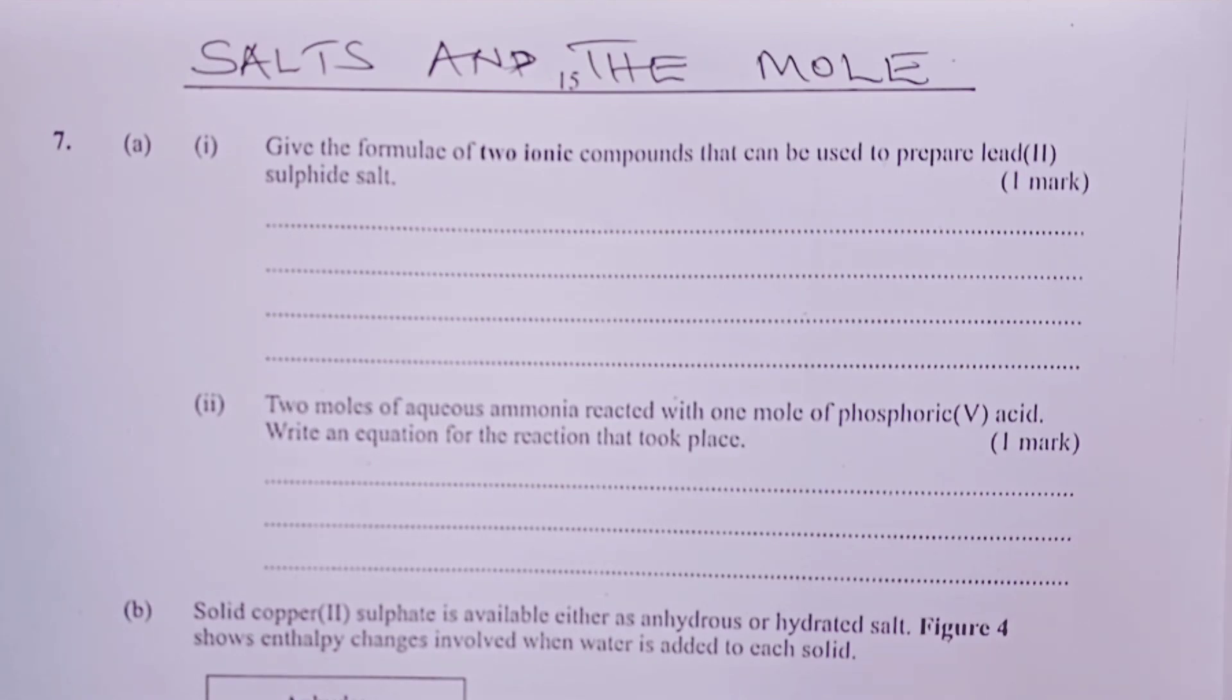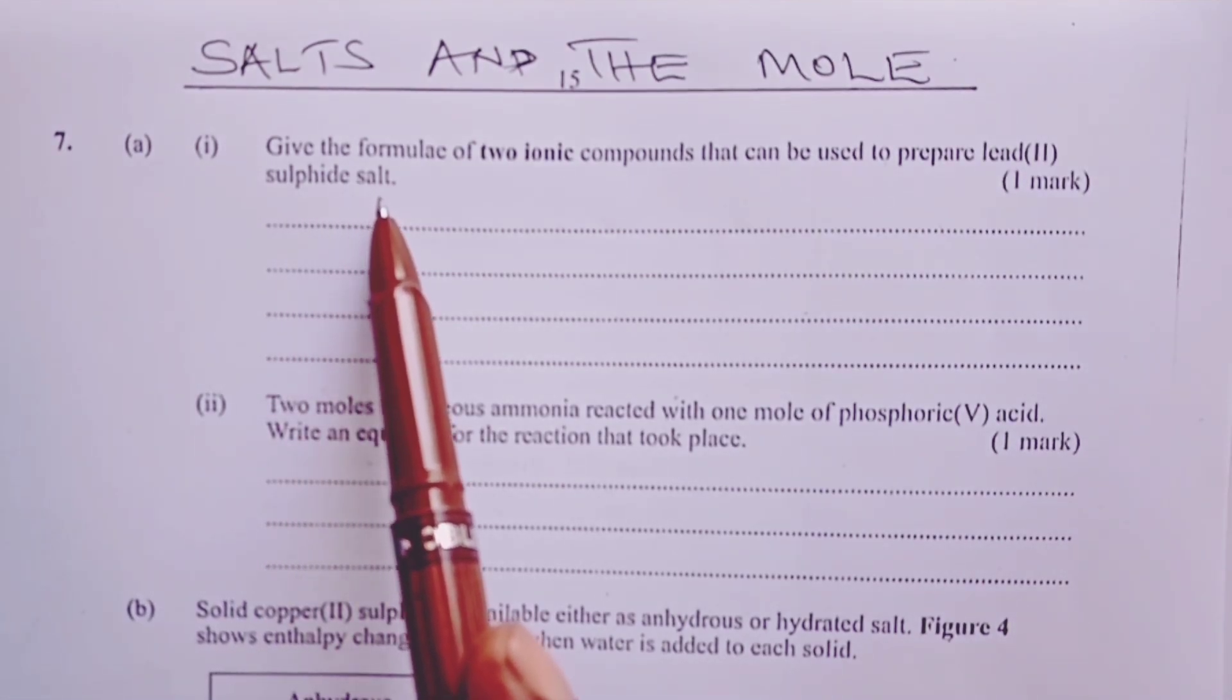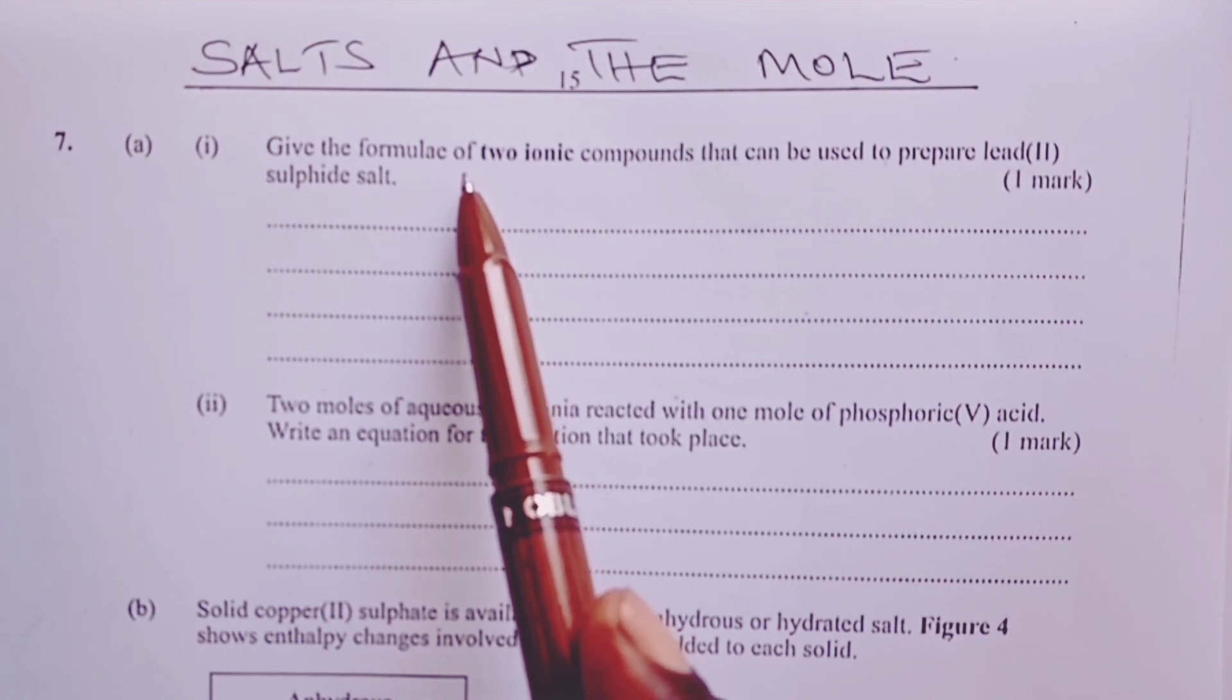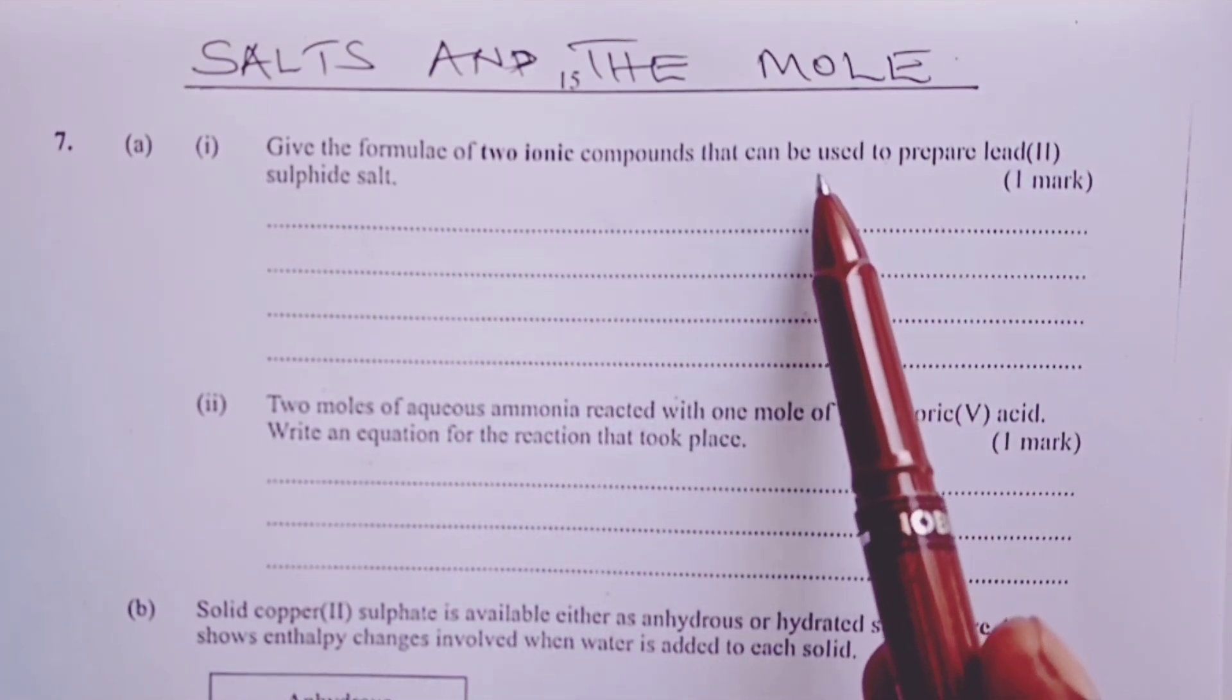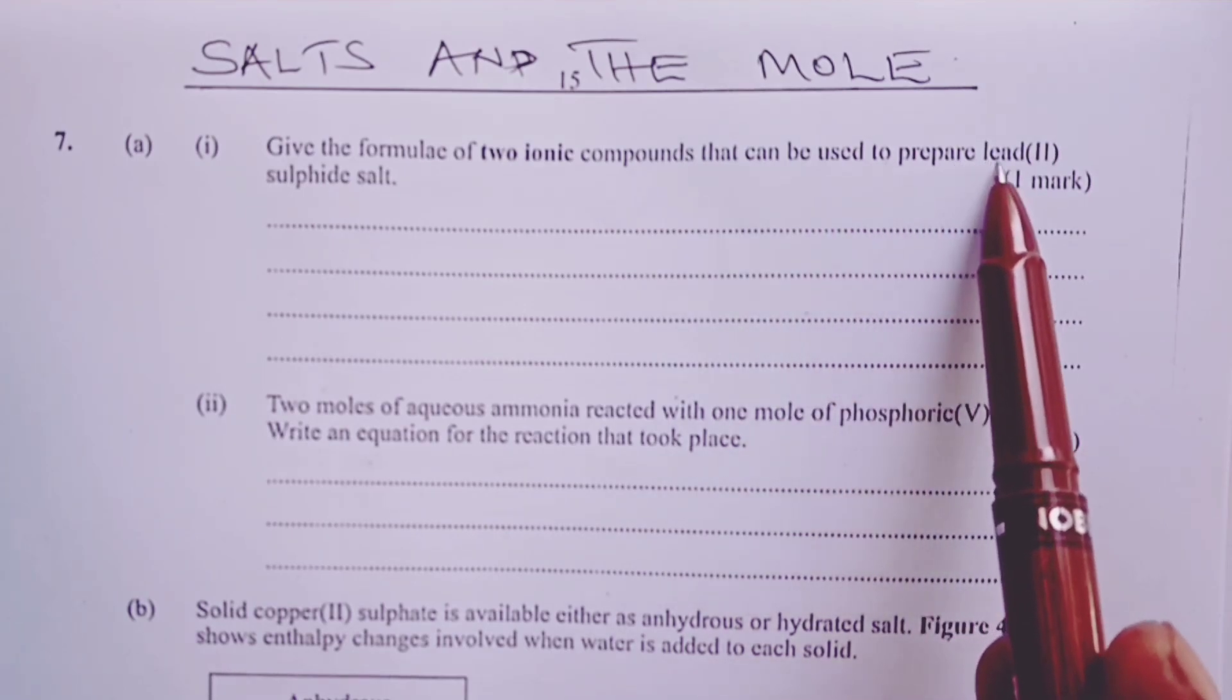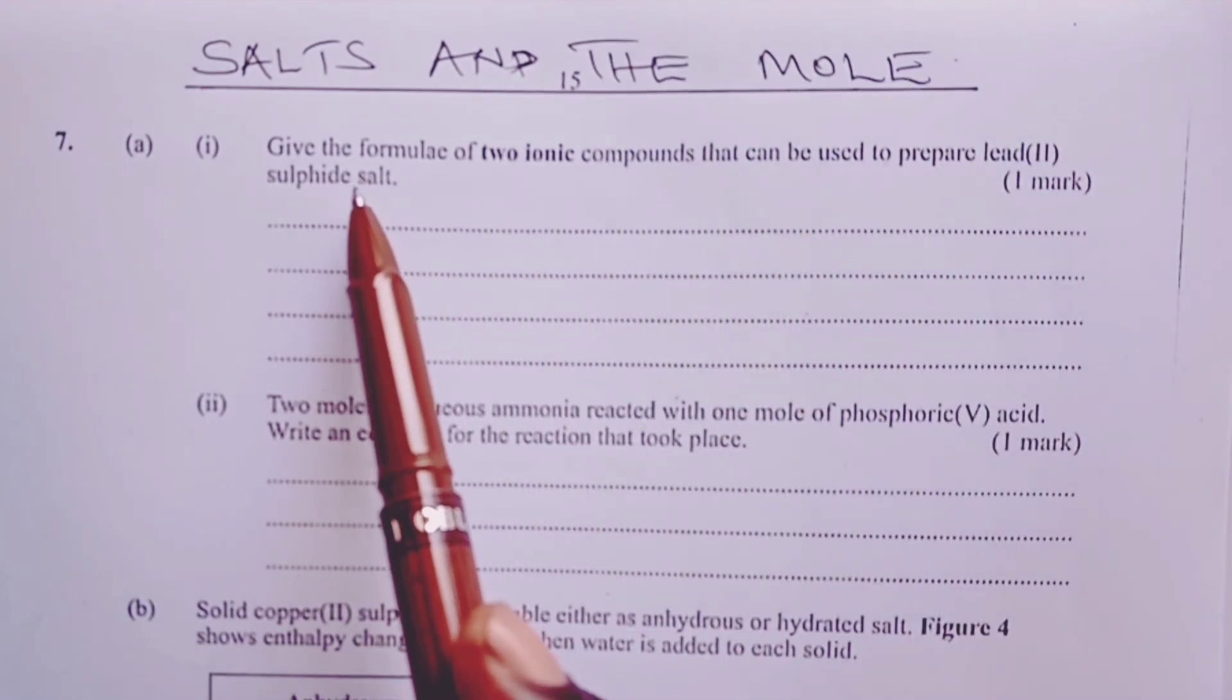Part A, Roman 1. Give the formulae of two ionic compounds that can be used to prepare lead(II) sulfide salt.